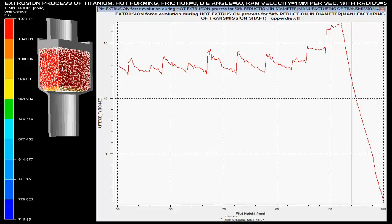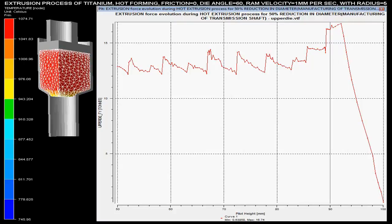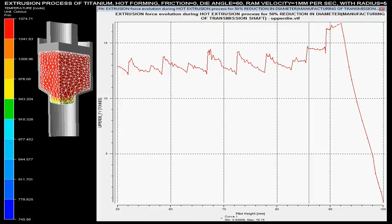In this video you can see the extrusion process of a titanium solid shaft with 50% reduction in diameter of the billet.